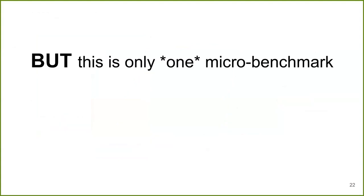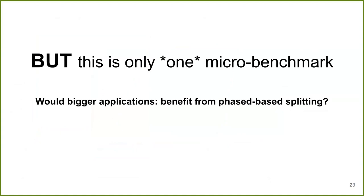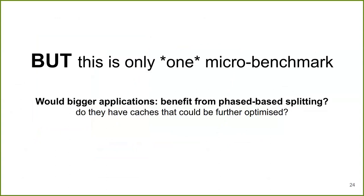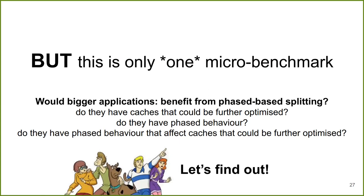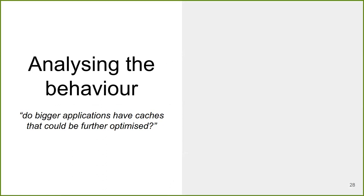But there was only one microbenchmark on a research language. So we still don't know whether bigger applications would benefit from phase-based splitting, and more specifically, we don't know whether they actually have caches that could be further optimized. That's why we started to do this analysis, and that's the question I'll try to answer.